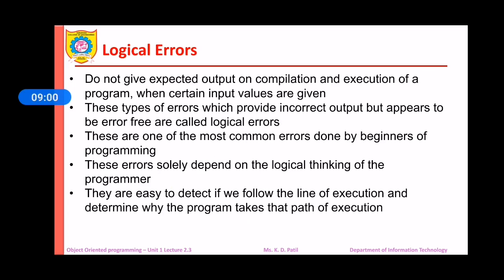Logical errors occur when we do not get the expected output after compilation and execution of the program. Such errors occur after giving input to the program — they provide incorrect output but appear error-free. In that case, we have to check our algorithm to get the correct output. Beginners in programming often encounter such errors. These errors solely depend upon the logical thinking of the programmer. They are easy to detect if we follow the line of execution and determine why the program takes a particular path.